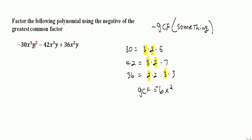For the y's I've got y squared, y, and y. So what they have in common is just the 1y. So we're going to be factoring out a negative 6x squared y.